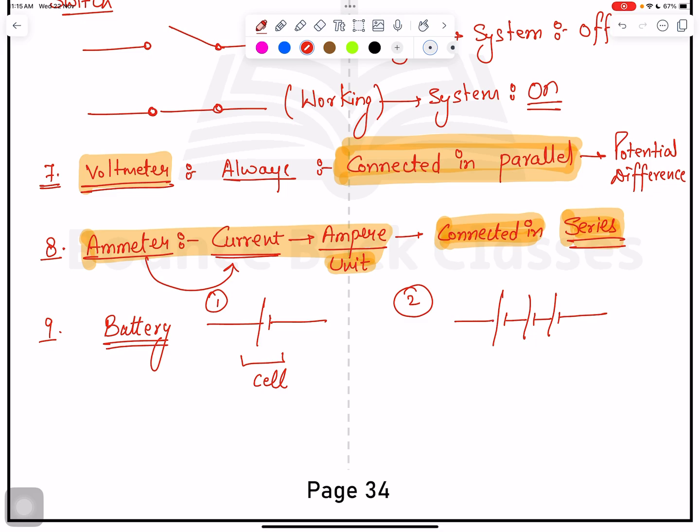Like this, lots of cells, you can say cell A, cell B, cell C. So this is called battery.